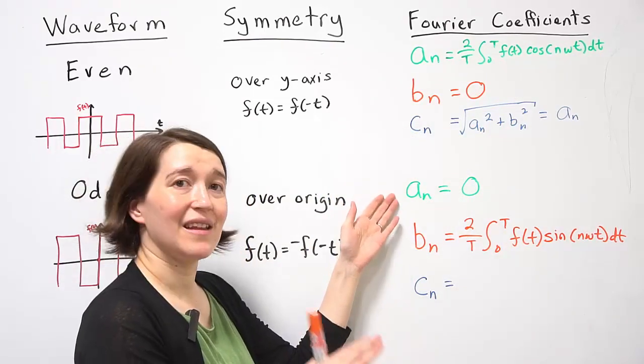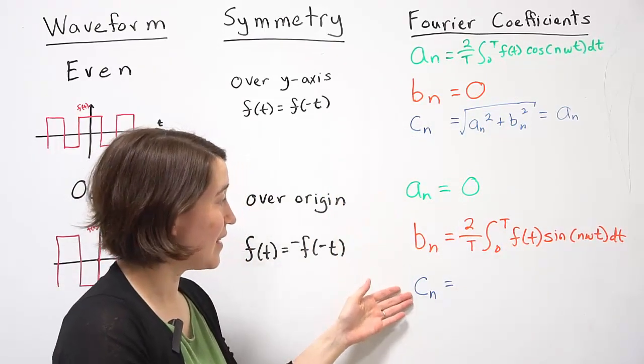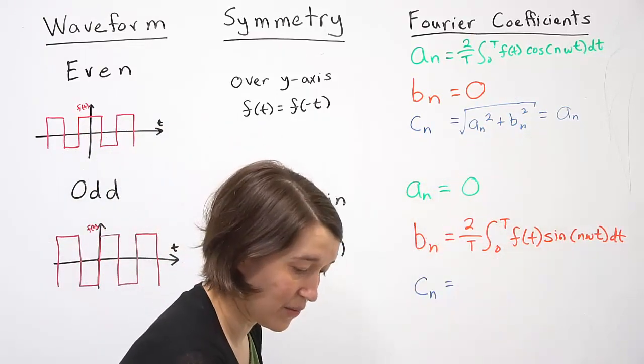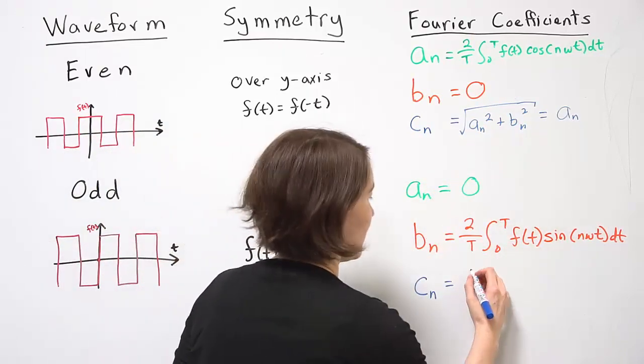Because our An is 0, Cn, based on our definition here, is going to be equal to just Bn.